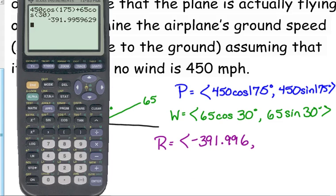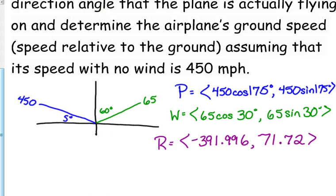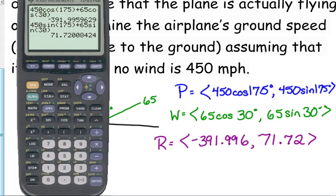Let's check the y. What value should it have? Positive, it should be positive. There's no reason why we should end up in the third quadrant. So there's our resultant vector. Let's find its actual speed. Speed is magnitude.